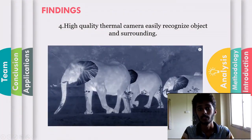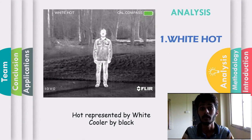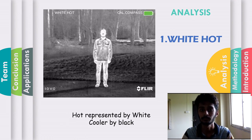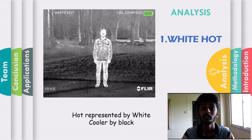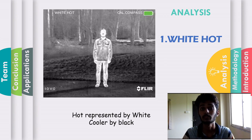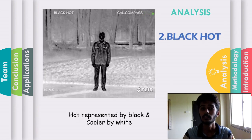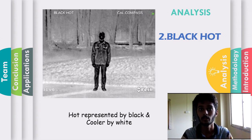There are many types and techniques to find and analyze the temperature of the surrounding and the body. The first type is white hot: in this type, white represents the hotter body and black represents the relatively cooler body. The next type is black hot, which is just the vice versa of white hot — black represents the relatively hotter body and white represents the cooler one.